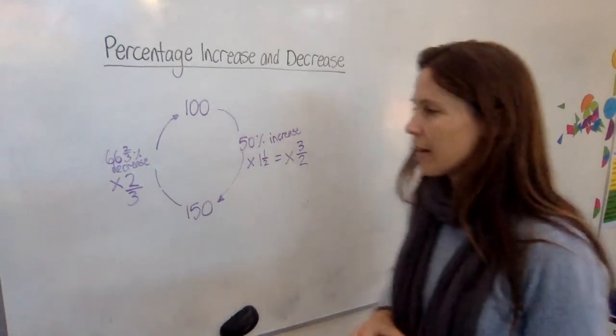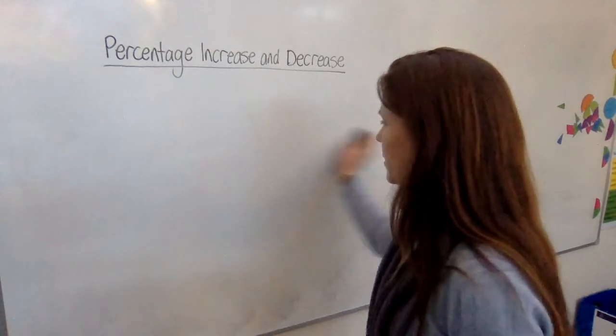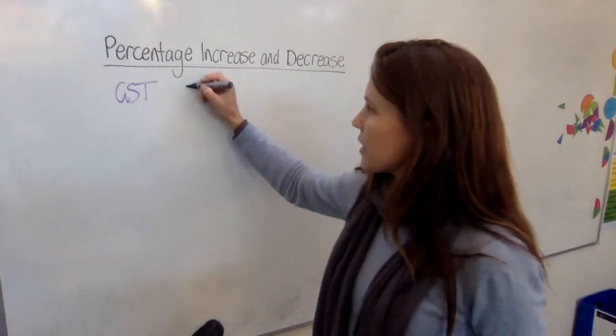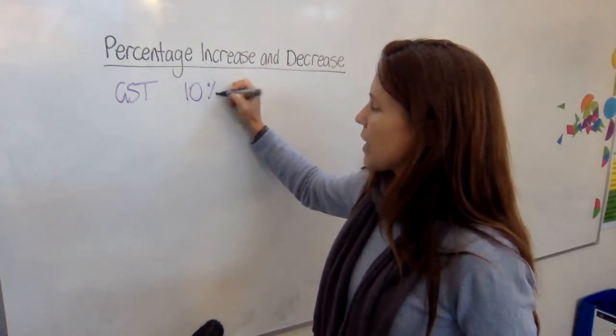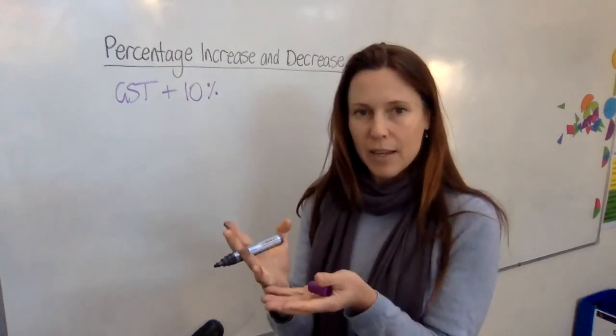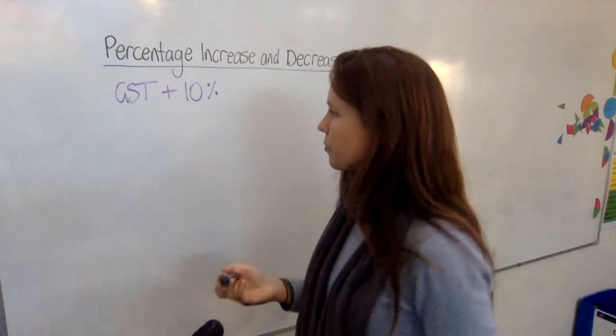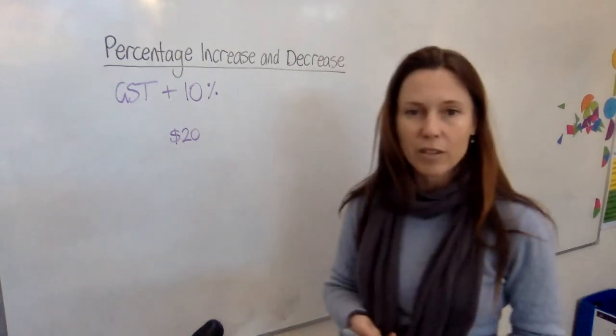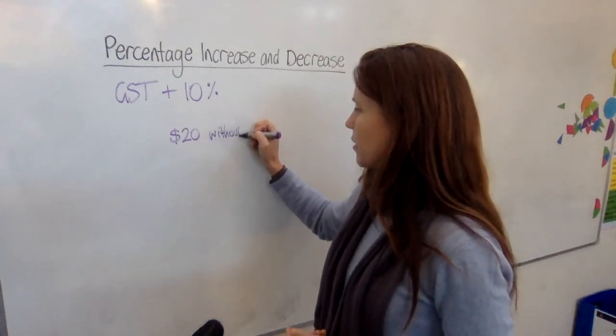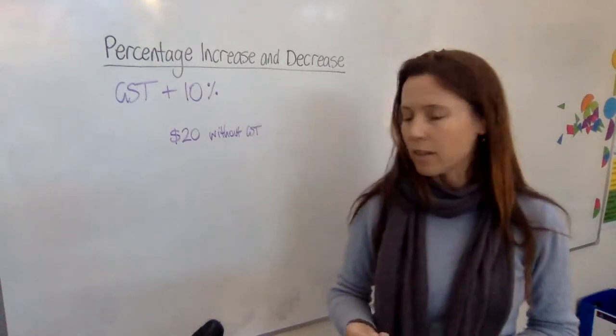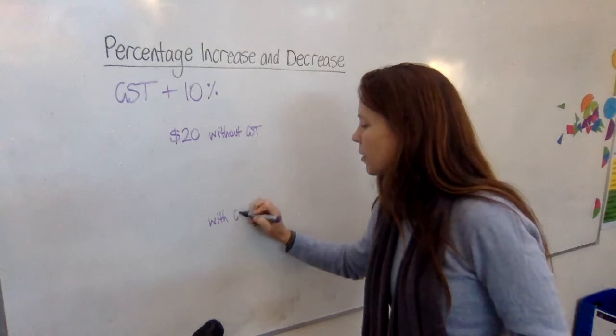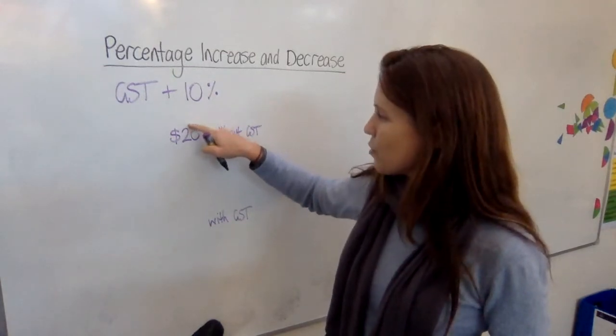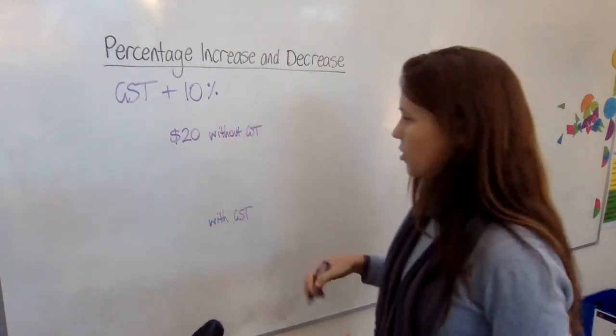Now, an example that's like this but is really relevant in finance and for shop owners everywhere is looking at the GST, which is the goods and services tax. Now, the GST says that whatever price you want to sell something for, you need to add 10% to that and then put that on the price tag so that the customer is paying 10% extra. So if we had something like perhaps we were going to sell a T-shirt for $20, that's without the GST. How much do we need to sell it for with the GST? Well, you need to find 10% of this. 10% is one-tenth and the easiest way to find that is move the decimal point and it'll be $2, won't it? So you need to add $2.